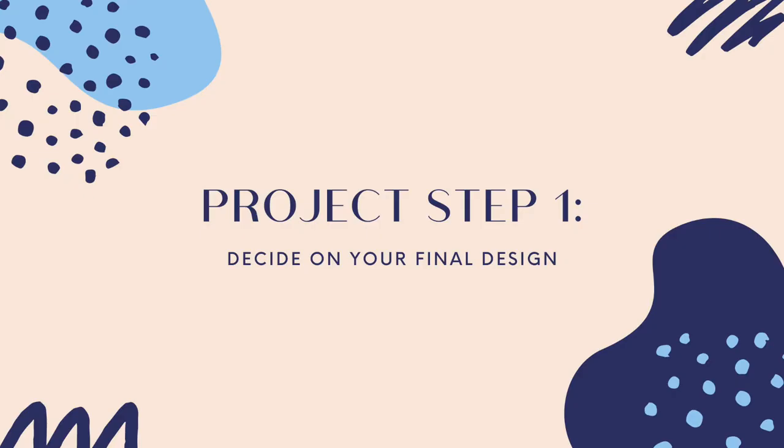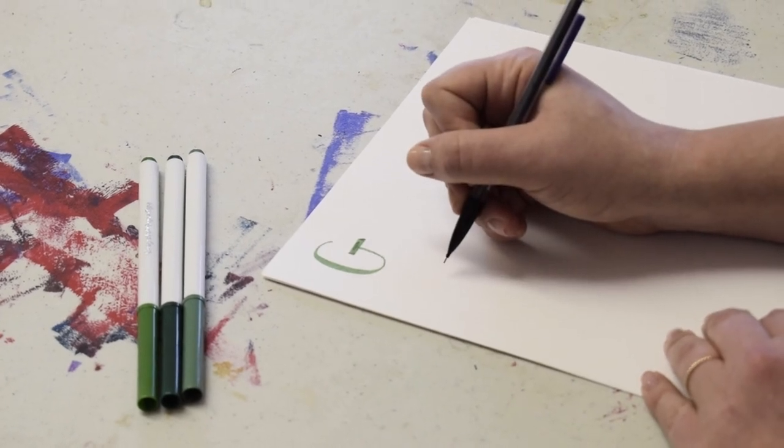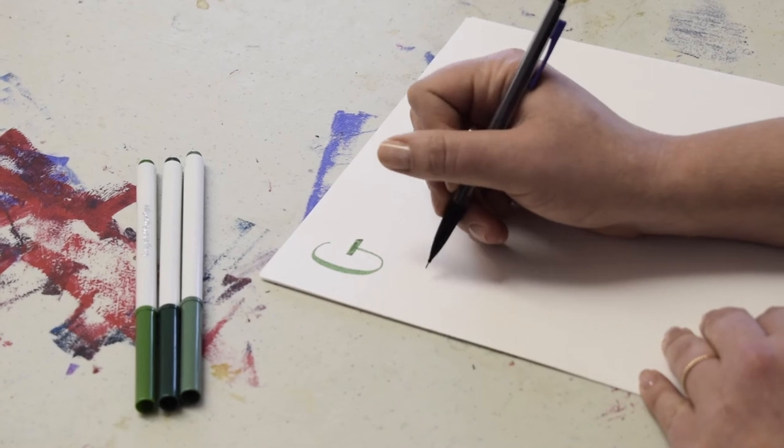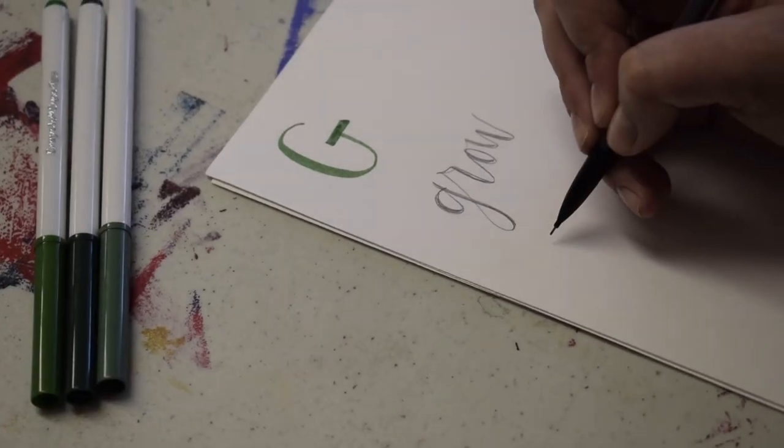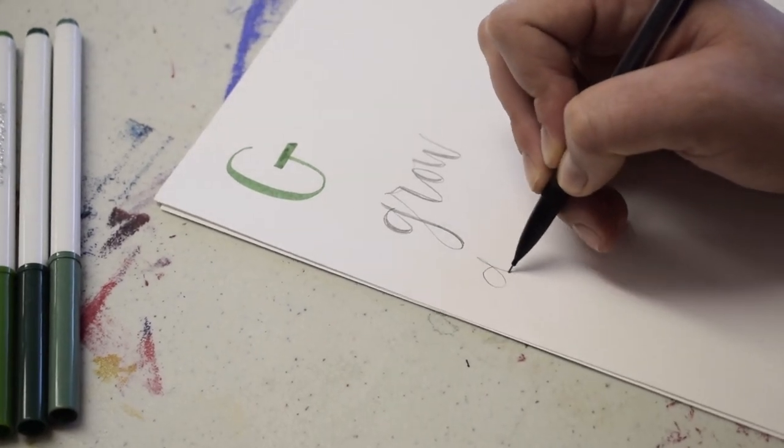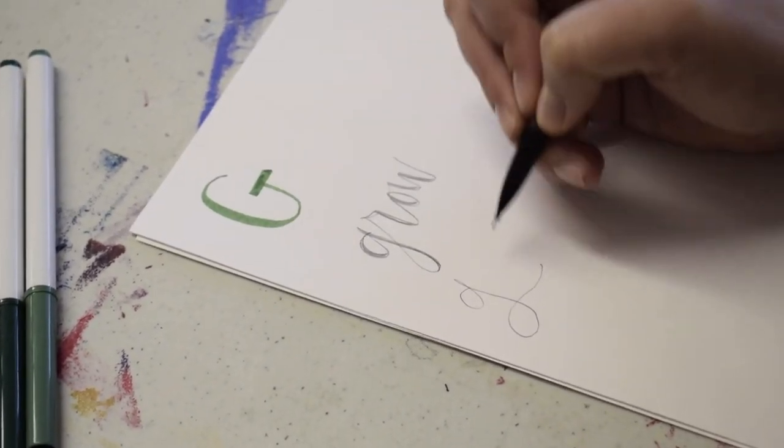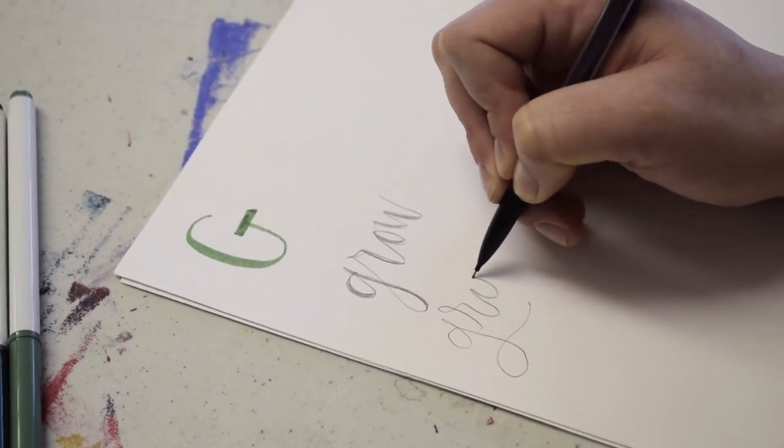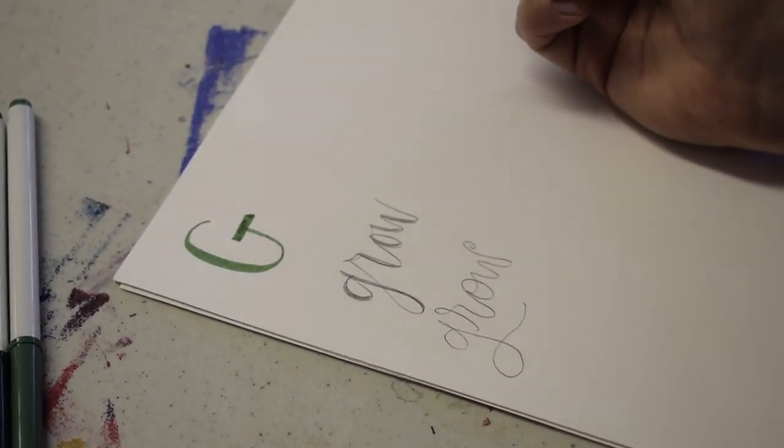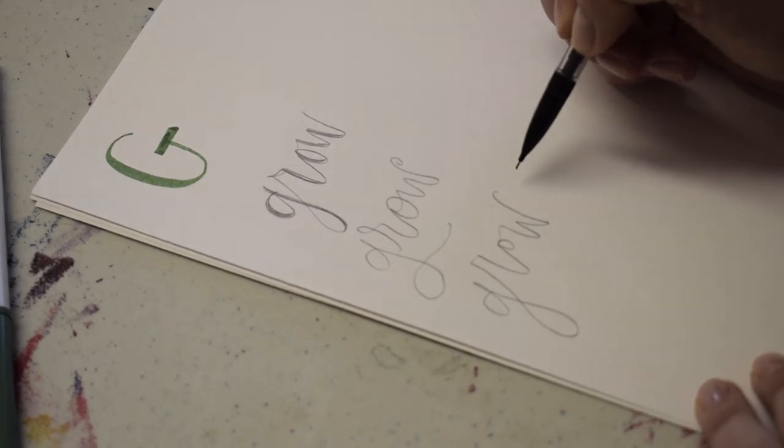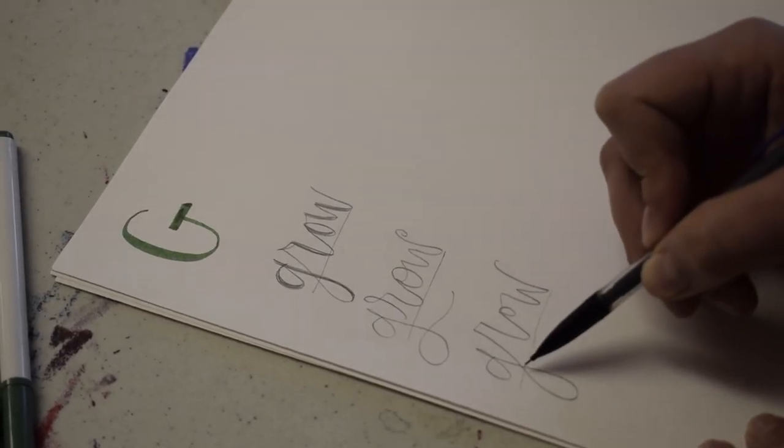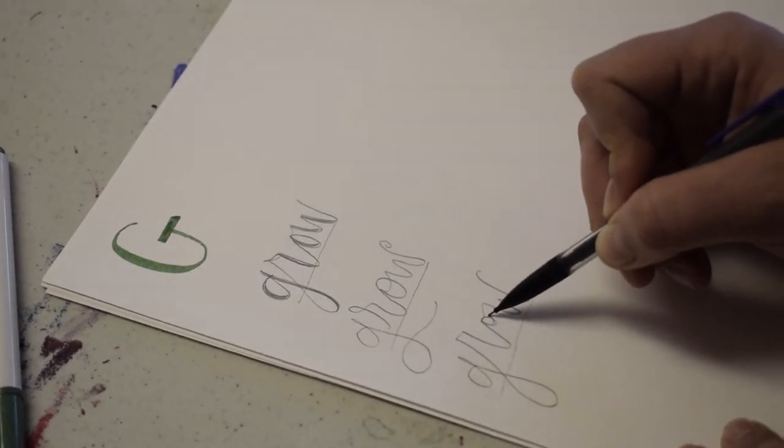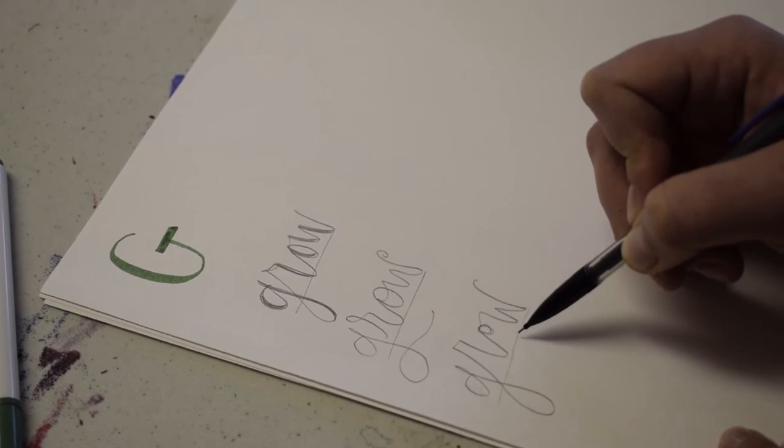Now using your pencil, we're going to start practicing the word that we want to use for our completed project. Today, I'm going to be writing the word grow. So I'm going to begin by just practicing a few different styles to land upon the one that I'd like to use in the end. In modern calligraphy, there really are no rules. You can make it up as you go. See how these two examples were all on one straight line? In this example, I use more of a bouncy style, where my R and my O jump way above the line. This provides a more whimsical look to your writing.